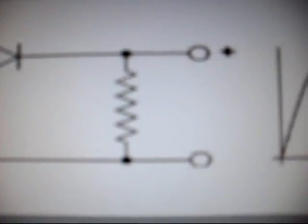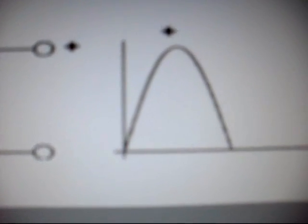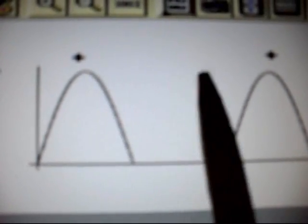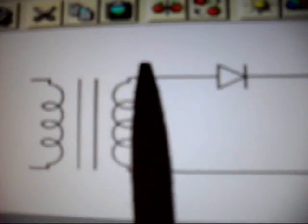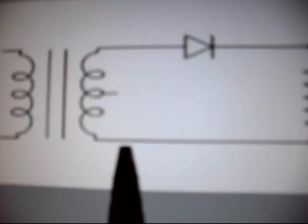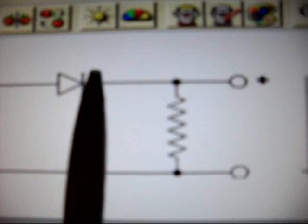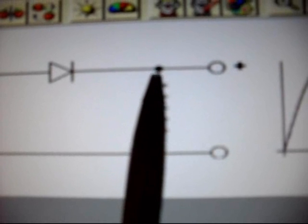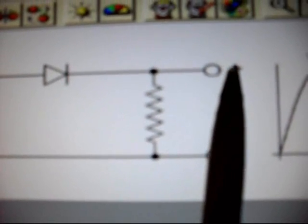This circuit here is a half-wave rectifier, along with its output waveform. When the top end of the transformer secondary is positive with respect to the bottom end, current will flow from the anode to the cathode of the diode. The forward drop across the diode is small compared to the voltage of the transformer, and almost all of the voltage appears across the load resistor. The positive half cycle appears across the load.